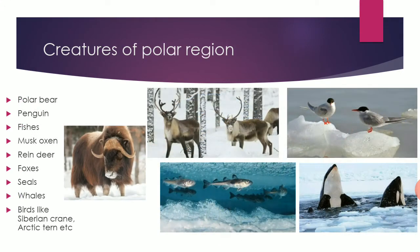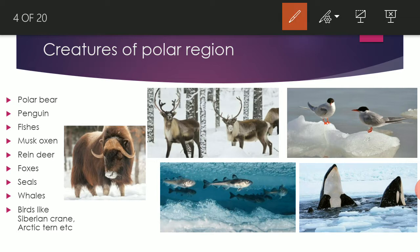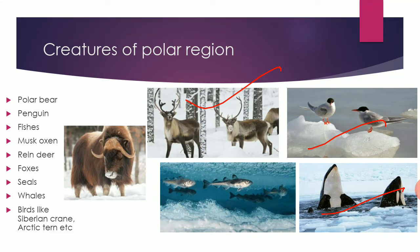There are several creatures in polar regions — polar bears, penguins, several fishes, reindeer, Arctic terns, palm whale, Siberian crane, and seals. All over this polar region, different types of mammals, birds, and fishes can be found. As per our syllabus, we will discuss the polar bear, penguin, and some migratory organisms.